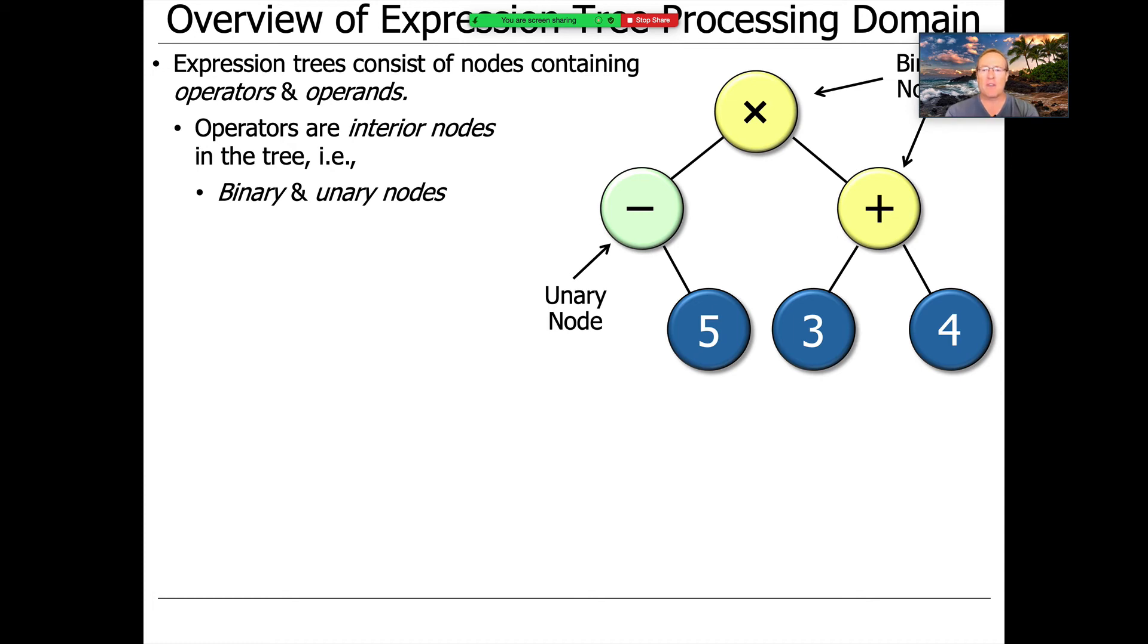In our model, the operators, like plus and minus and multiplication and so on, are interior nodes in the tree. And you can see here that we have binary nodes and unary nodes in this particular tree. So the binary nodes would be things like multiplication and division and addition or subtraction or binary subtraction.